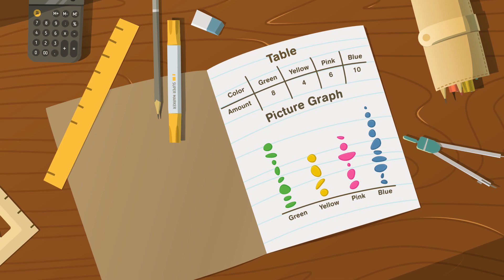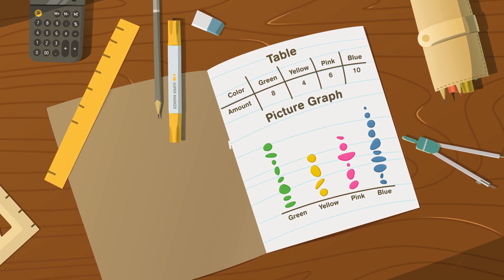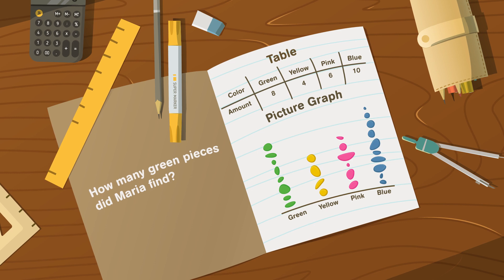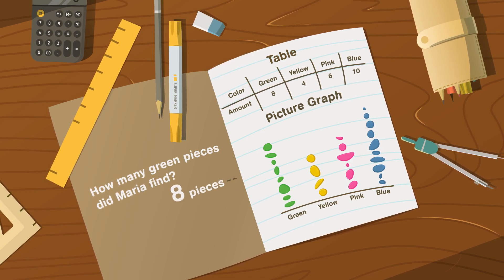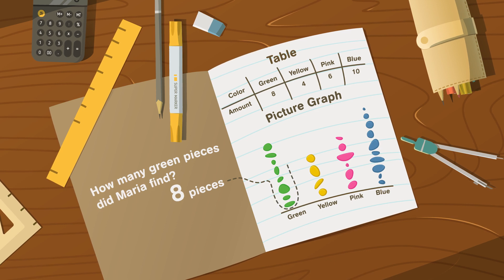Now she can answer questions about the data. How many green pieces did Maria find? She found eight pieces. You can tell by counting the pictures.